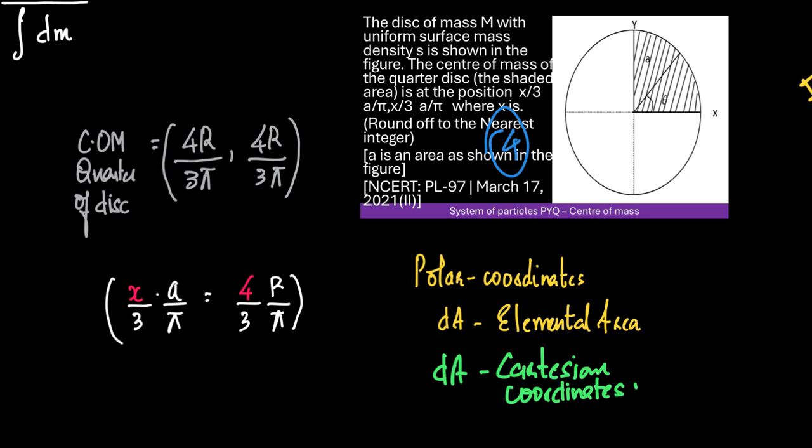Now, what's important to understand here is how did we say that the center of mass of a quarter of a disc is 4r by 3π, which is really important. So to understand the center of mass of this quarter of a disc,